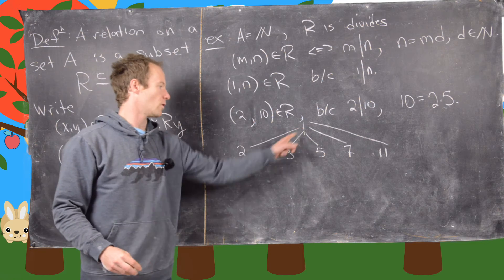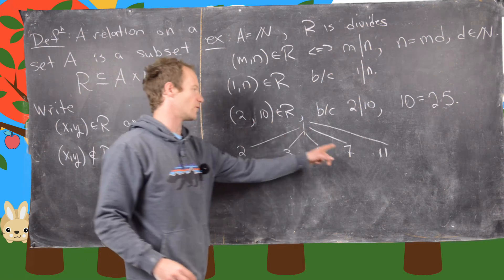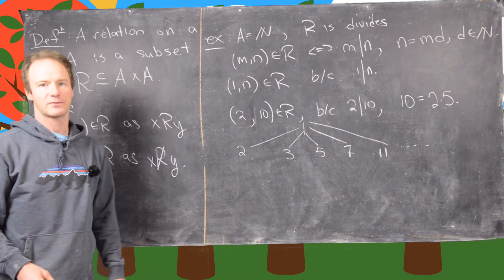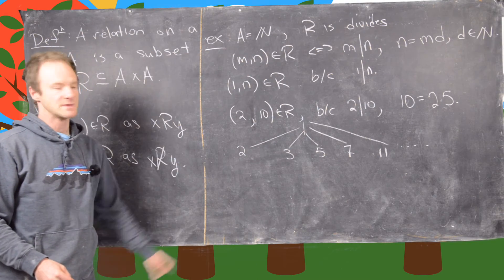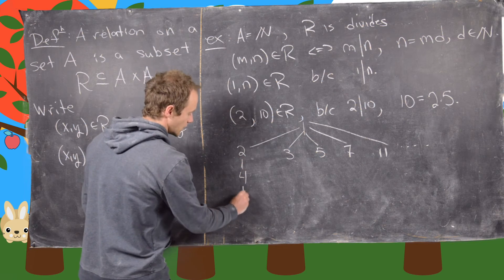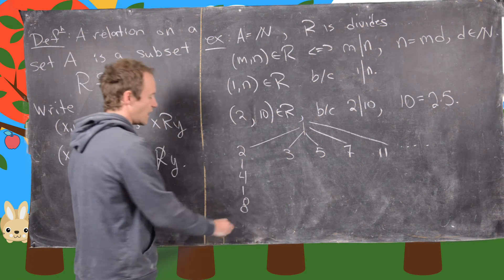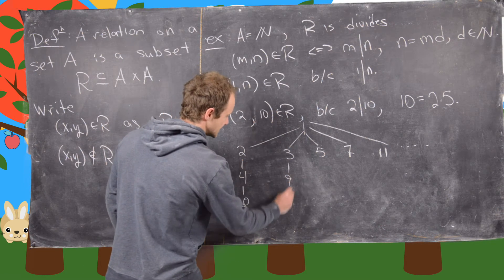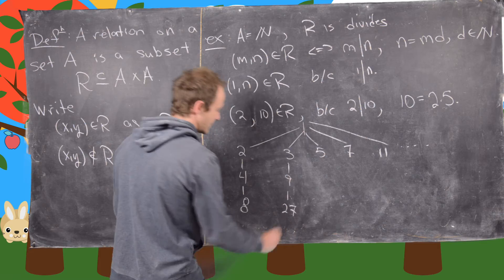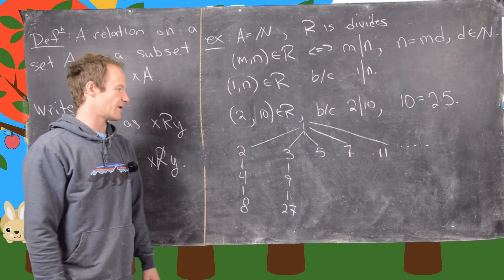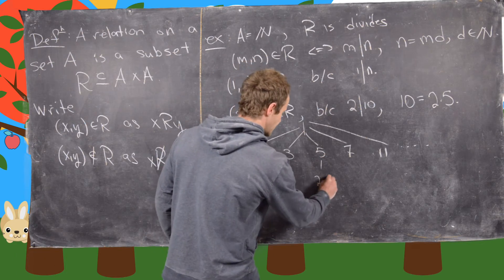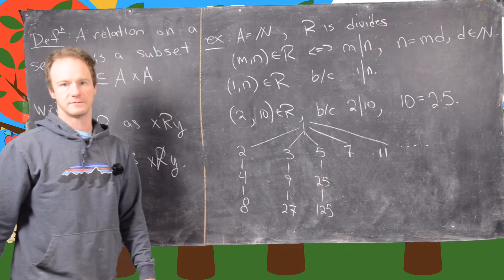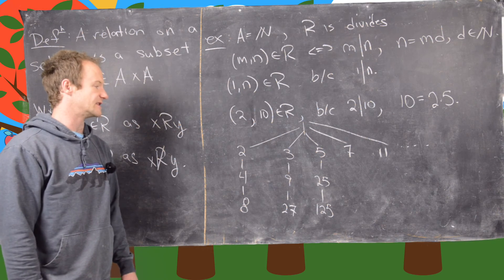So notice 1 divides 2, 1 divides 3, 1 divides 5, 1 divides 7, 1 divides 11, and so on and so forth. So there are obviously infinitely many primes, so we can't write them all down. And now 2 divides 4, which divides 8. So all the powers of 2 go straight down here. And here we have 3 divides 9, which divides 27. So those all go straight down there. 5 divides 25, which divides 125, and so on and so forth. And then we can put things in the middle here.